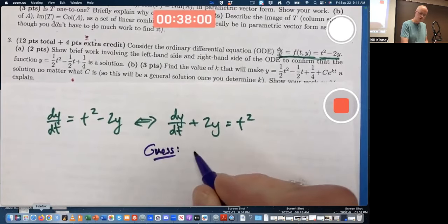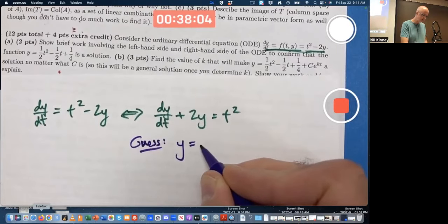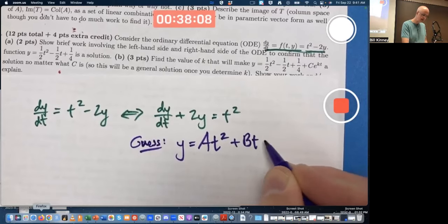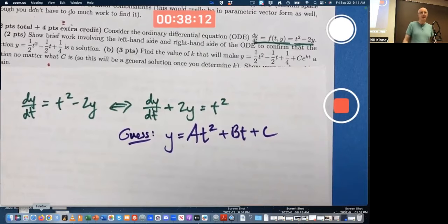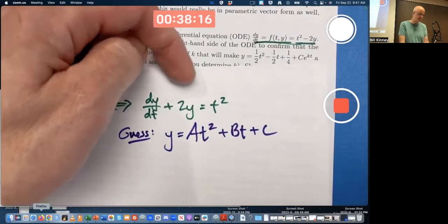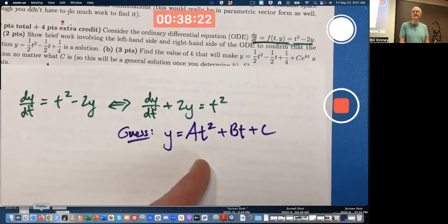Guess y equals some constant, a times t squared, plus some other constant, b times t, plus a constant. It's guessing, but it's a reasonable guess, because I'm after a function whose derivative plus 2 times itself is always t squared. It's my work. I just got to figure out what a, b, and c are.